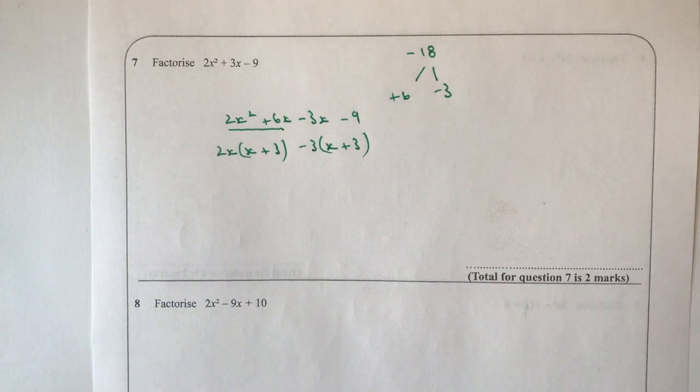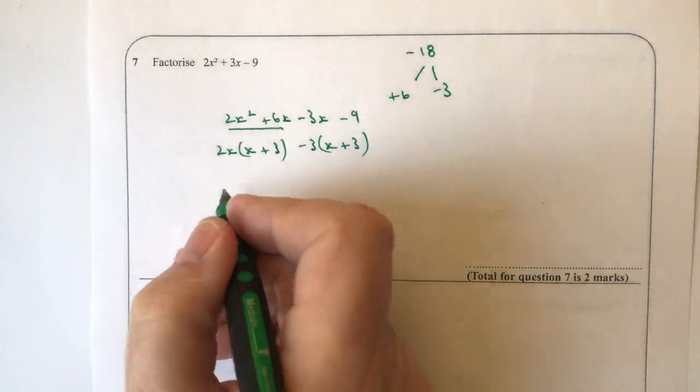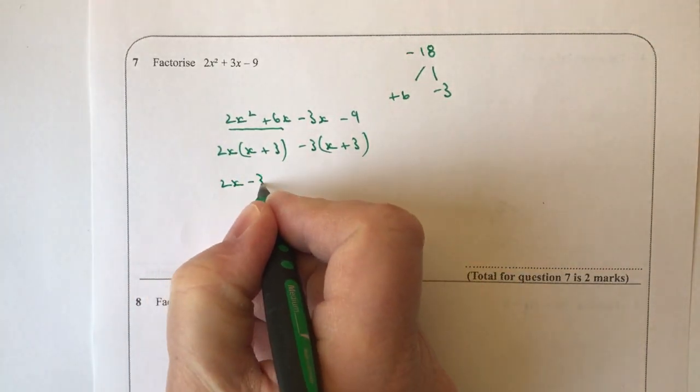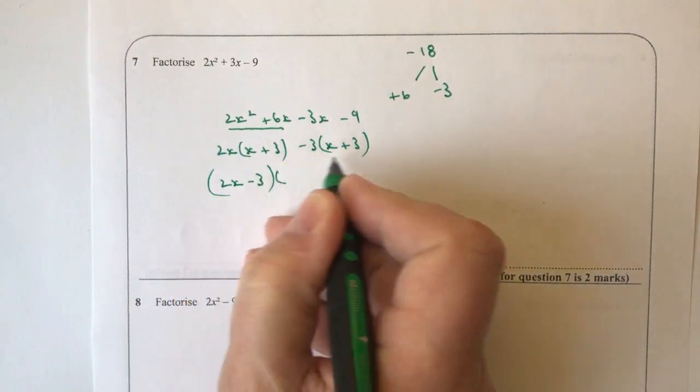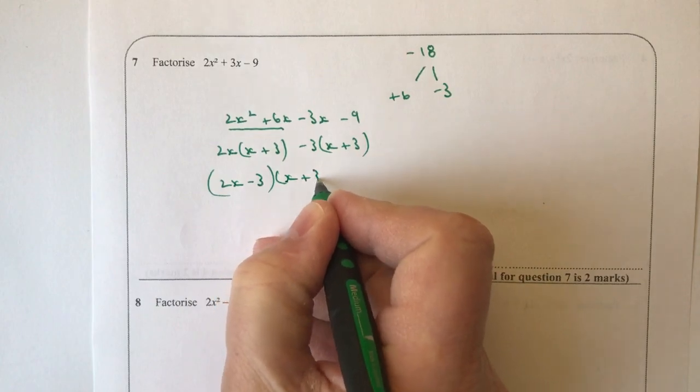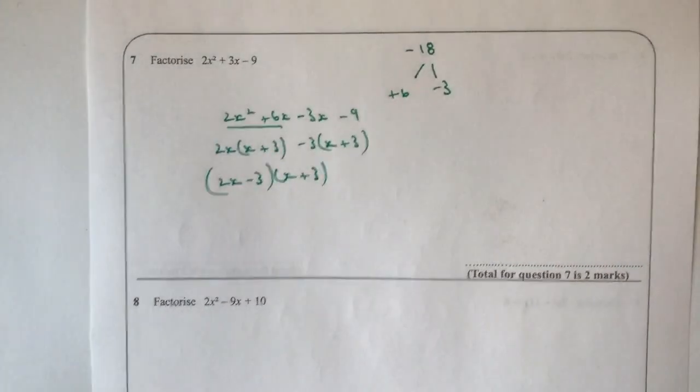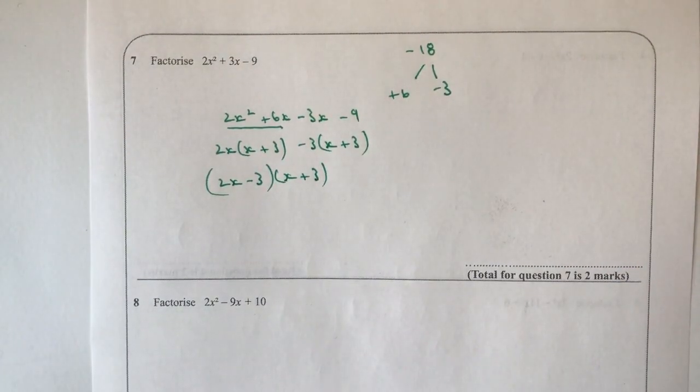And then when I gather these two together, I'm going to get 2x minus 3, and then I have a common x plus 3 in brackets. So I can write it like that, and that is actually my factorization of this particular term.